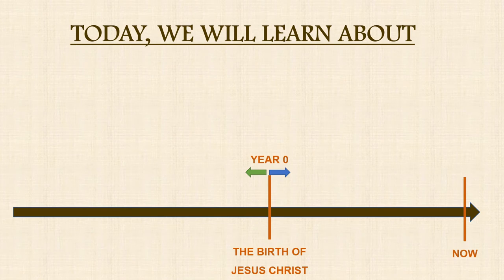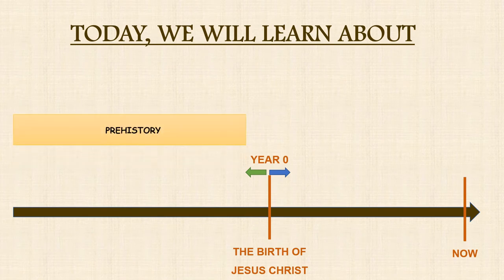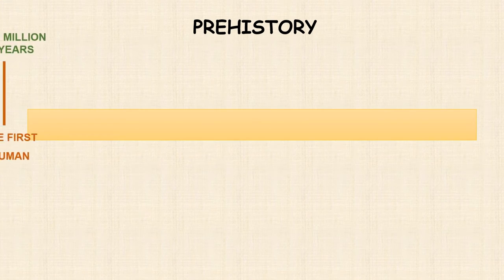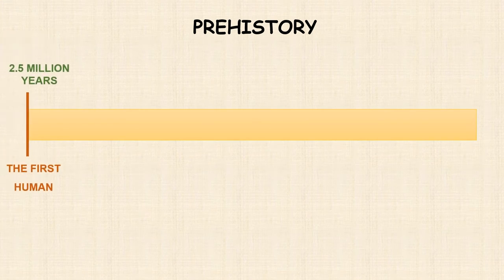Today we will learn about prehistory periods and ancient history periods. The prehistory period began 2.1 million years ago with the first human and finished in 3000 BC with the invention of writing.